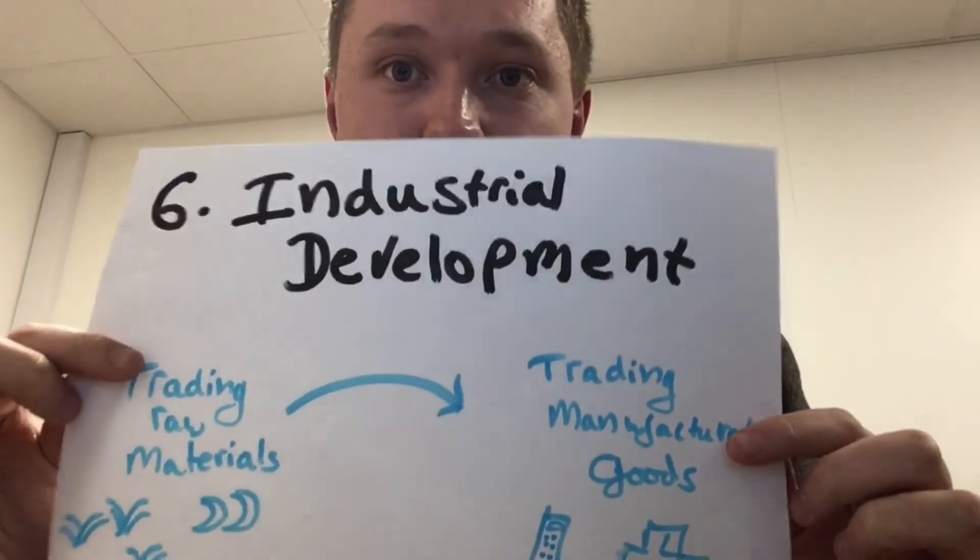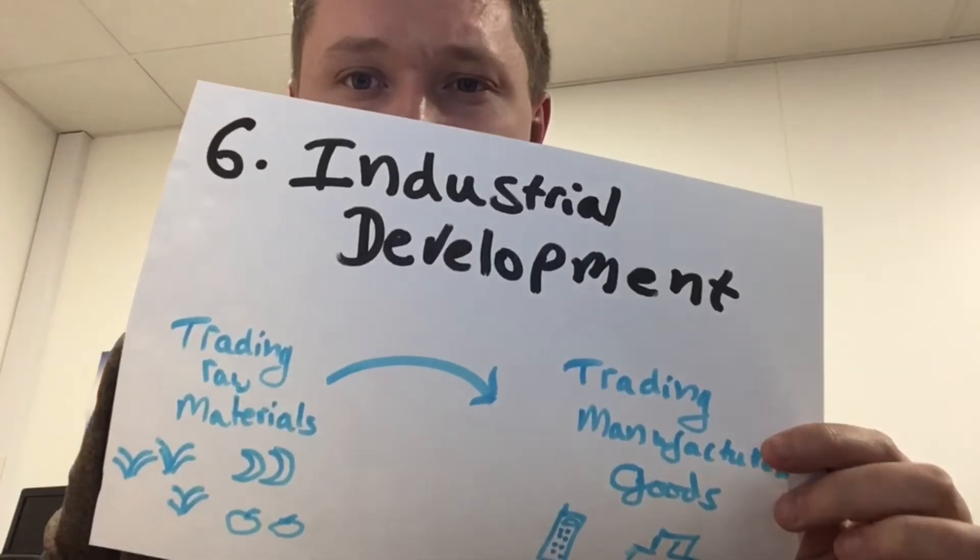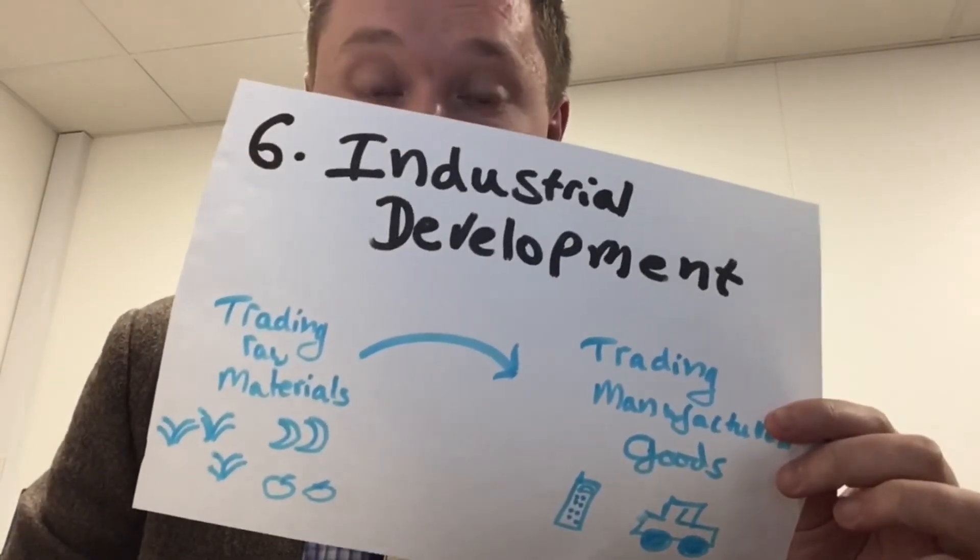The sixth strategy is industrial development. This is the idea that a country is better off moving from selling raw materials such as vegetables to selling manufactured goods such as cars and phones, because manufactured goods generate more profit. A country can therefore improve its development this way. This has worked for China, which has become the workshop of the world by producing so many manufactured goods. One problem is that by moving away from raw materials and encouraging industrial development, countries can make themselves vulnerable to exploitation by large transnational corporations who might come in and take their natural resources.